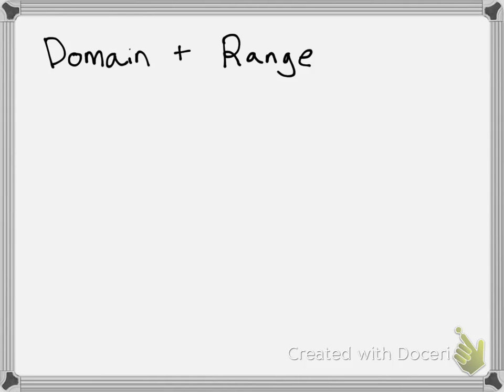When you're talking about domain and range, you're of course talking about a set of something, so we're always going to have to open up with a set bracket. Now when you're talking about the domain and range of a function or a relation that has an infinite number of points, we need a good way of talking about the x values or the y values, because we obviously can't just list them out. So we're going to talk about the notation you use when you have an infinite number of values.